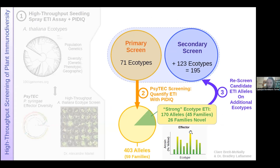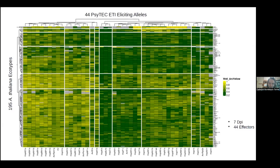We selected 45 representative alleles from the 170 candidates identified, one per family, and expanded our screen to include 123 additional ecotypes — now nearly 200 Arabidopsis thaliana ecotypes total. Re-screening these produced what you can think of as the Arabidopsis thaliana immunodiversity landscape against the Pseudomonas syringae effector compendium.